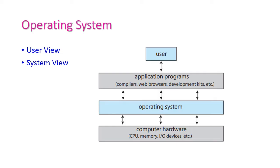As we already know, the operating system acts as an interface between the computer hardware and the application program. Without an operating system we cannot install any application program in a computer system. The operating system may be viewed from two different perspectives: first is the user's perspective, and second is the system's perspective.